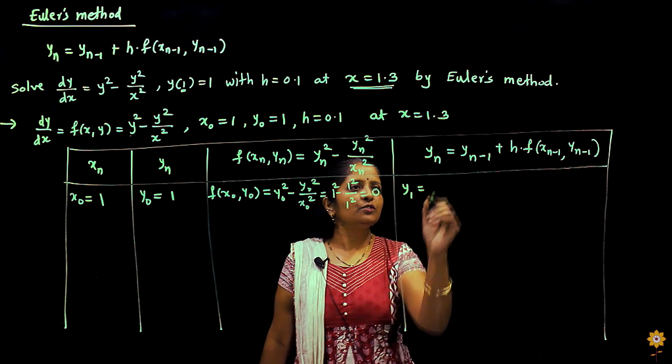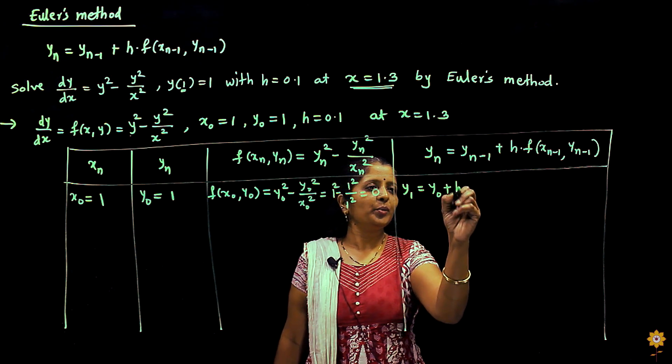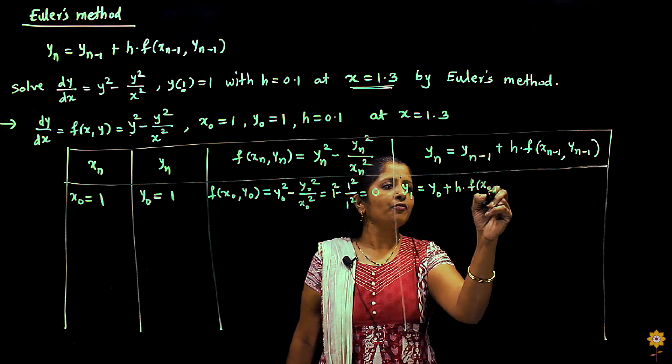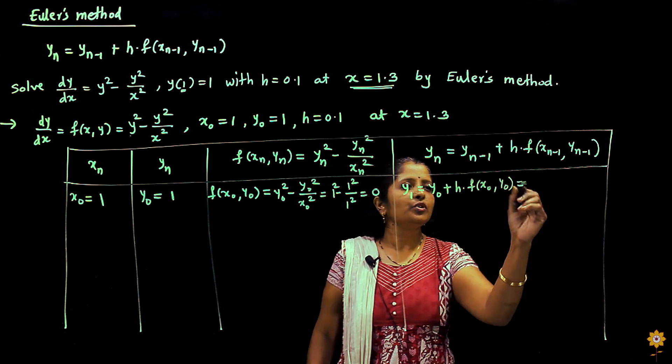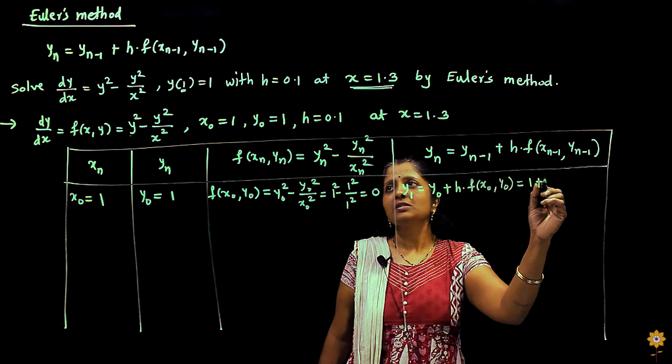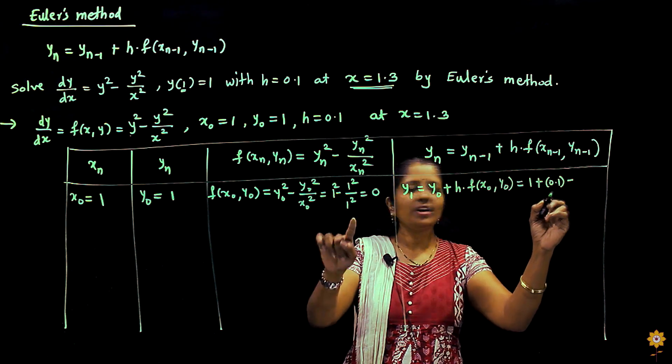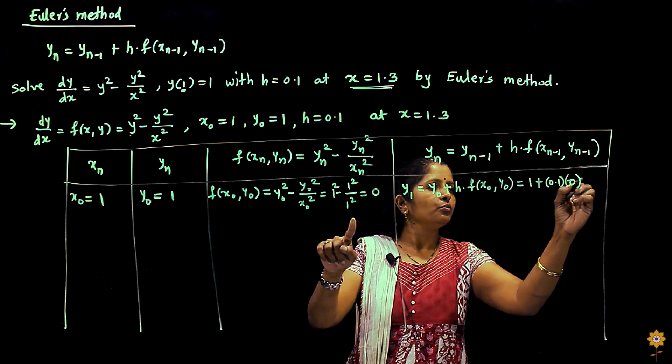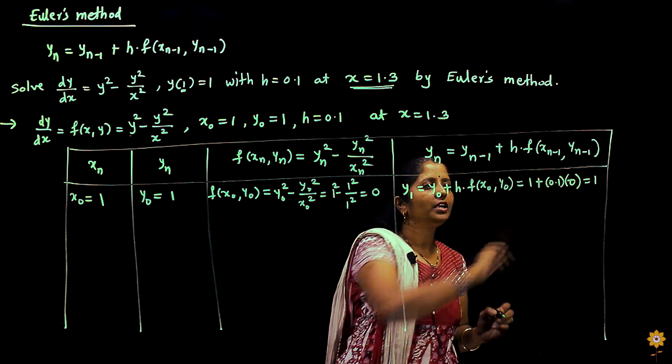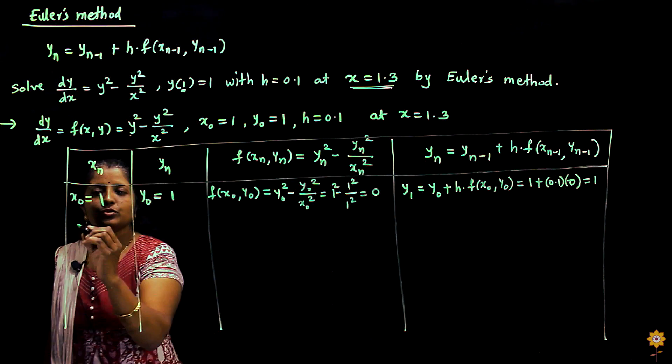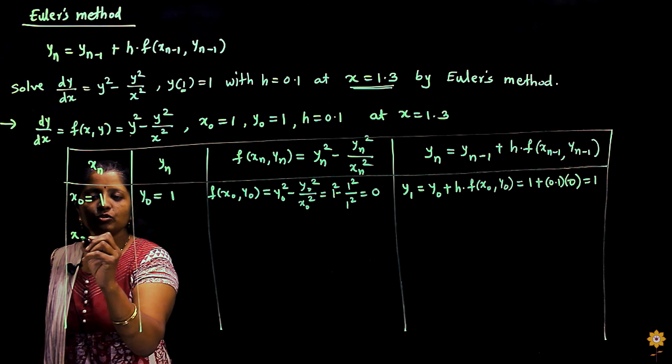y1 by using Euler's formula is y0 + h·f(x0, y0). So it is y0 is 1 plus h is 0.1 and f(x0, y0) is 0. So this y1 we will get as 1. Use these values in the next iteration.